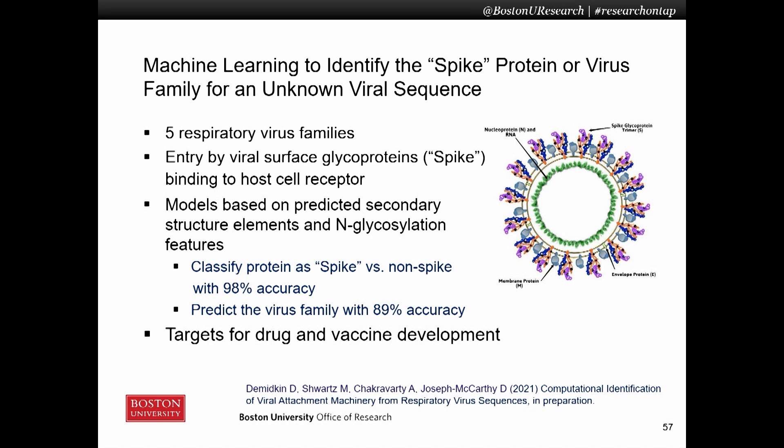Typically, very early on for an unknown virus the sequence is known, and the spike protein or its equivalent is a key target for drug and vaccine development.